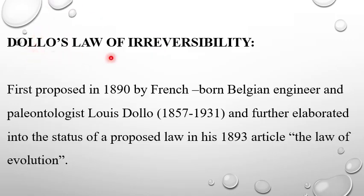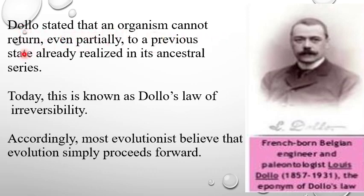Now, I will discuss about Dollo's law of irreversibility. It was first proposed in 1890 by French-born Belgian engineer and paleontologist Louis Dollo 1857-1931 and further elaborated into the status of a proposed law in his 1893 article known as the law of evolution. Dollo stated that an organism cannot return, even partially, to a previous state that was realized in its ancestral series. This concept of the law of irreversibility means that no process of evolution can be reversed. Accordingly, most evolutionists believe that evolution simply proceeds forward.